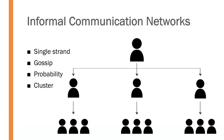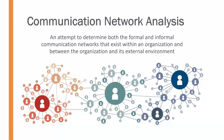So you have informal communication taking place in all of these different ways — it could be any one of these types, or some combination of them, that plays a large part in how things are communicated in any given workplace. The question then becomes: how do we go about analyzing this as an area of study? How do we conduct a communication network analysis within an organization?